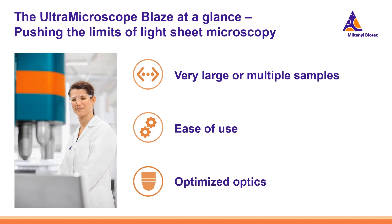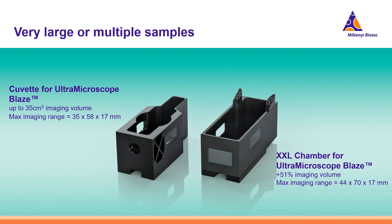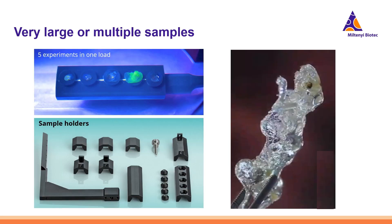The Ultra Microscope Blaze is truly pushing the boundaries of light sheet microscopy. One of its remarkable aspects is complete automation, which facilitates effortless imaging sessions with minimal manual intervention. The Blaze stands out because of its optimized optics. We offer two chambers: a standard chamber and an XXL chamber. The XXL chamber offers 51% more space compared to the standard chamber. You can image either a single or multiple samples, or even an entire mouse. We also provide a large number of sample holder options which you can choose according to your sample size.